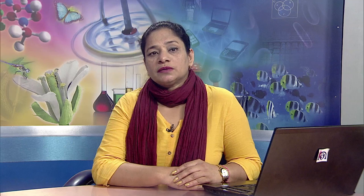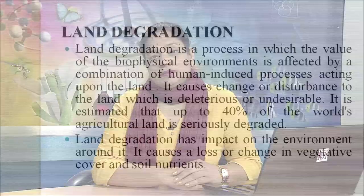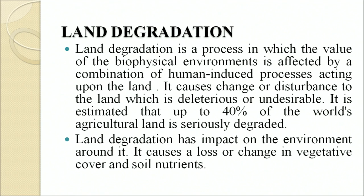Land degradation is a process in which the value of the biophysical environment is affected by a combination of human-induced processes acting upon the land, causing undesirable change or disturbance. It is estimated that up to 40 percent of the world's agricultural land is seriously degraded. Land degradation causes a loss or change in vegetative cover and soil nutrients. Degraded land is classified by productive capacity: slight degradation means crop yield potential is reduced by 10 percent; moderate degradation means 10 to 50 percent reduction; and severe degradation means yield potential is lost by more than 50 percent.